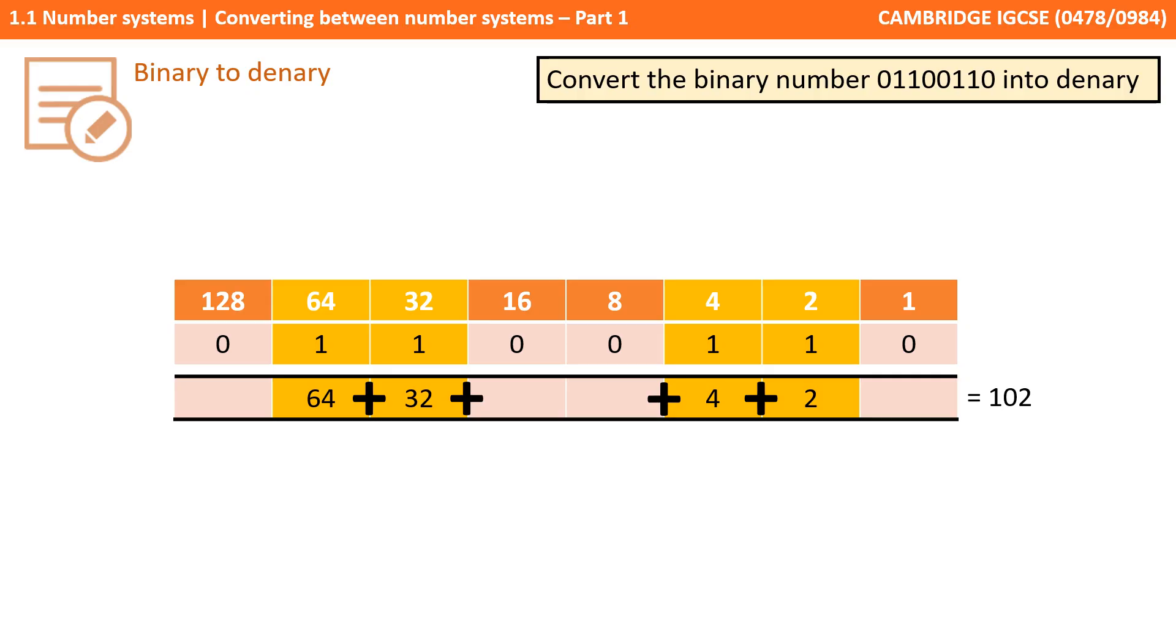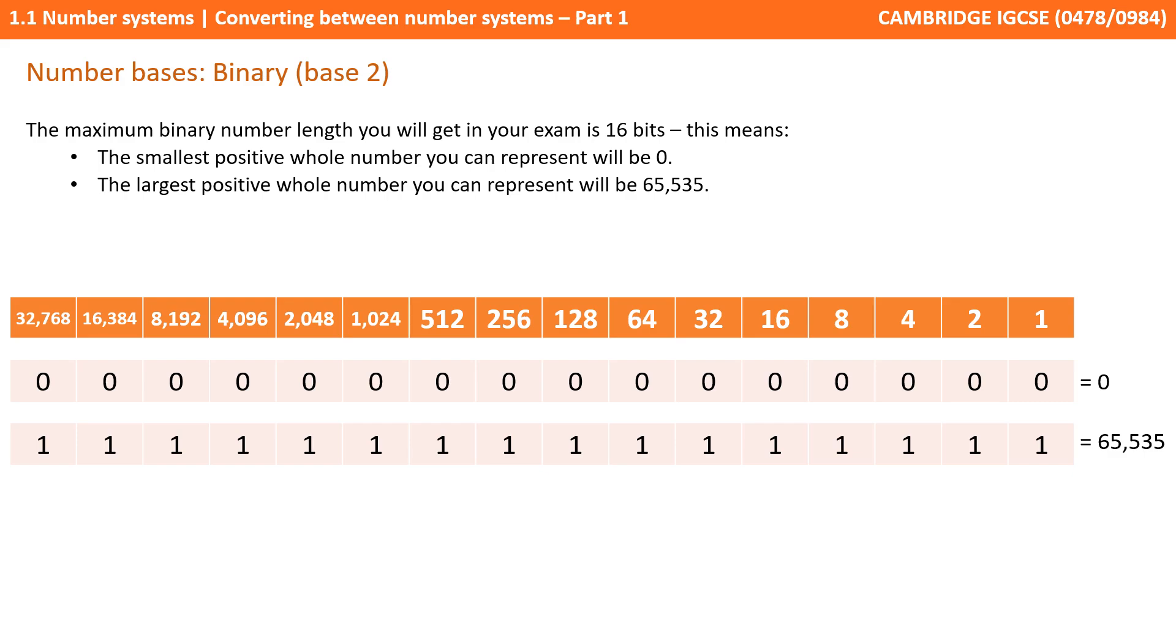And remember, in the exam, you might be asked to represent your answer in a certain number of bits. So if you were told to give this answer in 8 bits, you would need to pad your answer with 1 leading 0. On that point, it's worth noting that the maximum binary number length you could get in your exam will be 16 bits. Now we've kept it to 8 bits in this video, purely for simplicity and clarity on the screen, but the process is just the same. So this means the smallest positive whole number that you could represent in the exam would be 0, and the largest positive whole number you might be expected to represent would be 65,535.